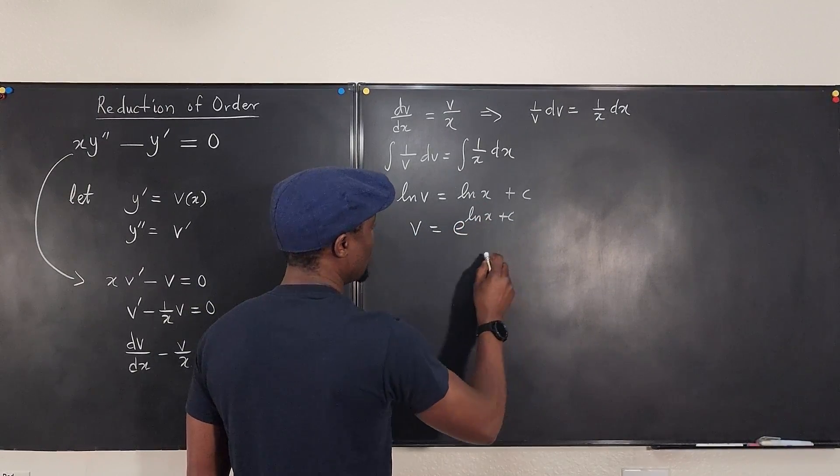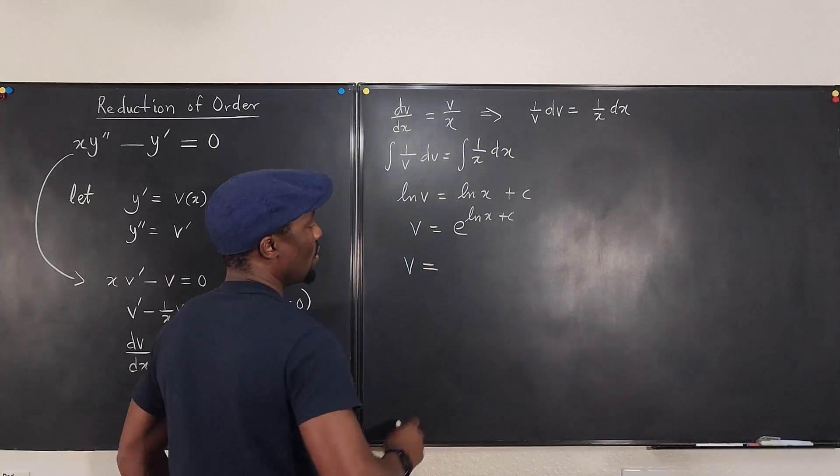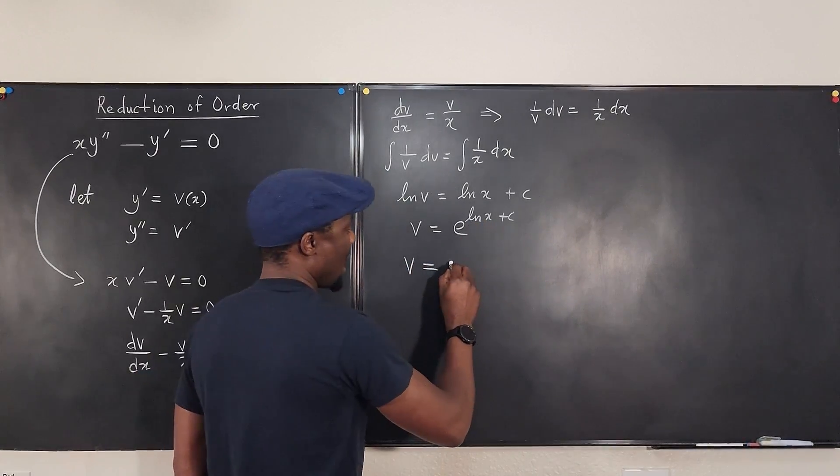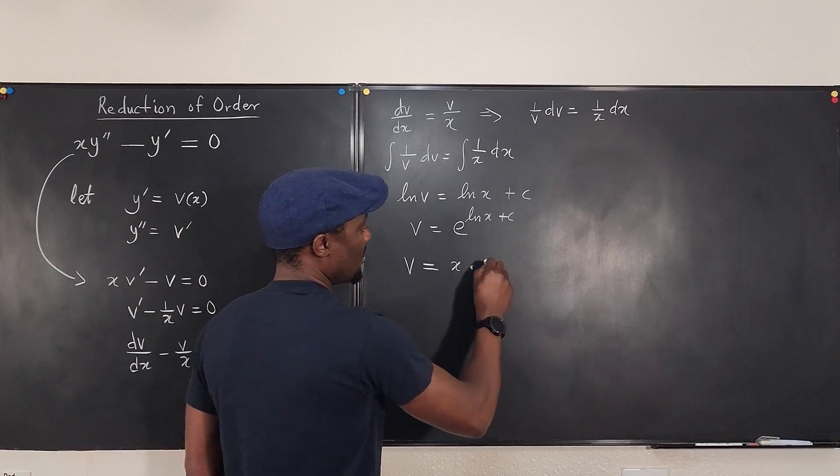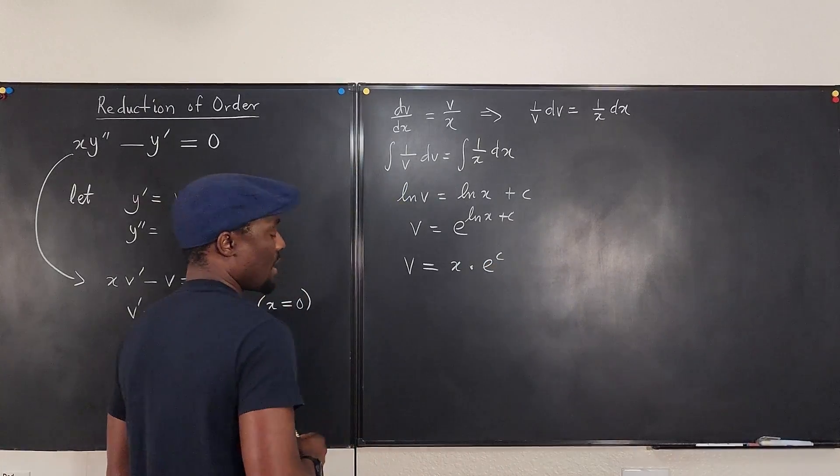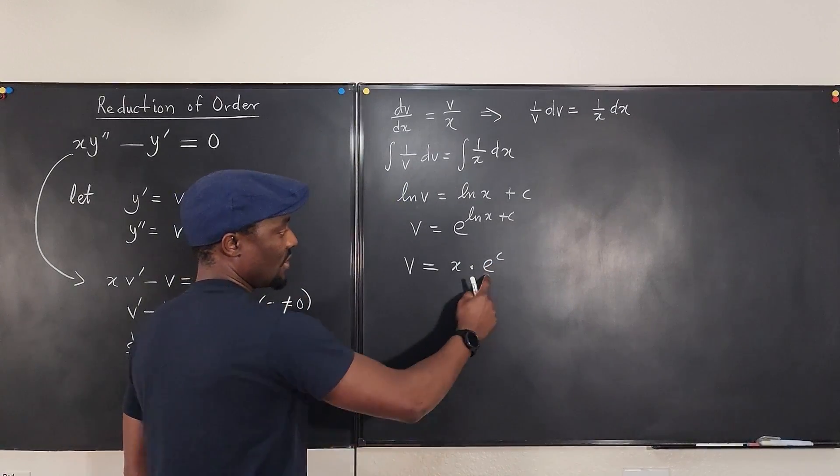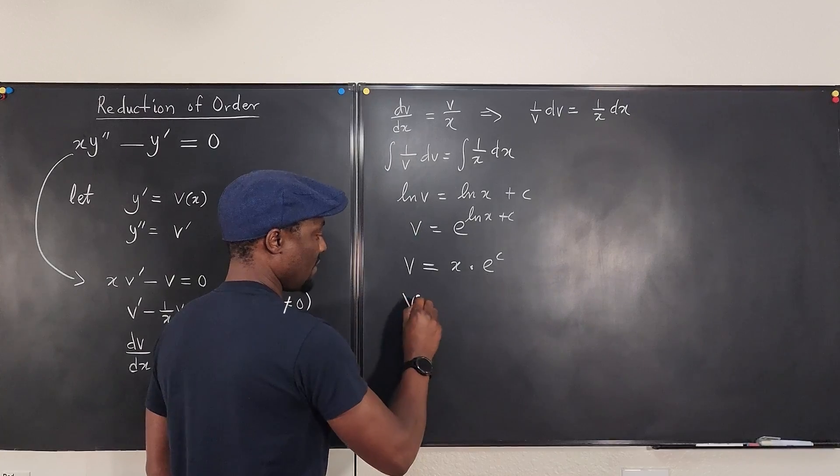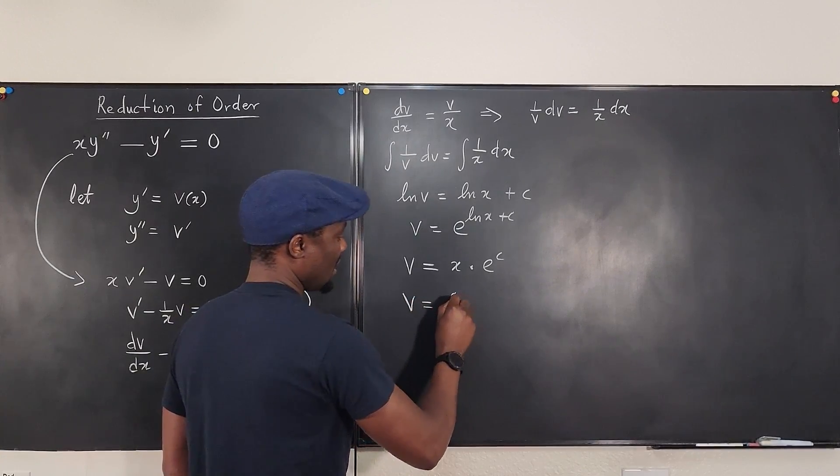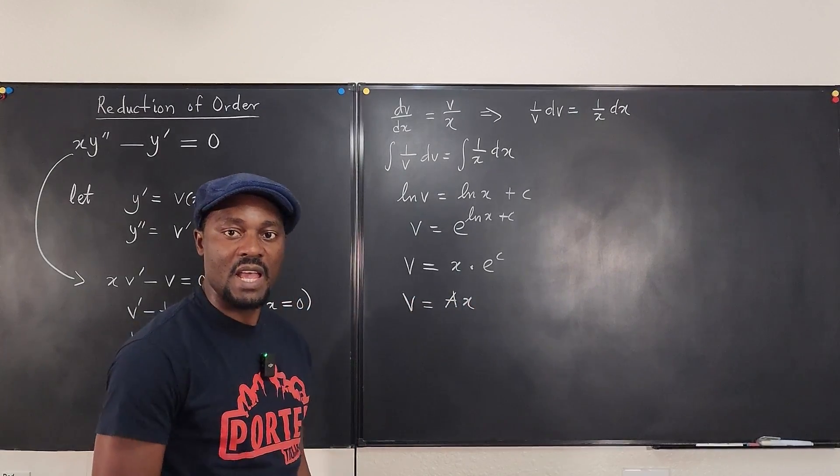plus c, which translates into v is equal to, this is going to be x times e to the c. Well, e to the c is a constant. So we can just say v is equal to, let's call it a, ax. So our v is ax.